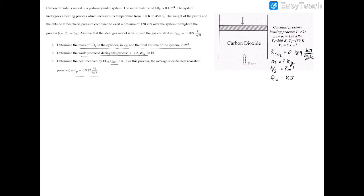Since the ideal gas model is valid, we can use the relationship PV = mRT — that is, pressure times volume equals mass times the gas constant times temperature. To get our mass, we rearrange: mass equals pressure times volume divided by the gas constant times temperature, evaluated at state 1, using P1, V1, and T1.